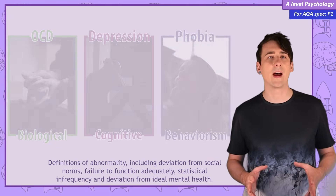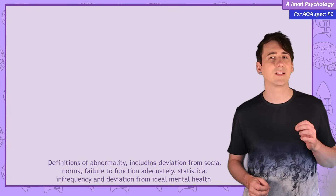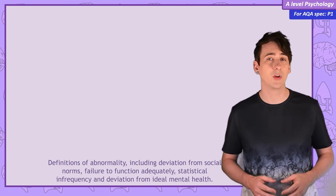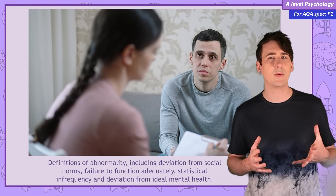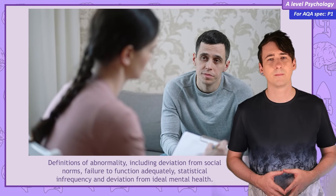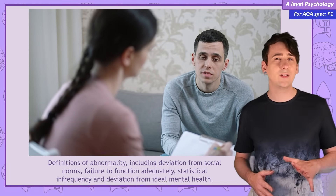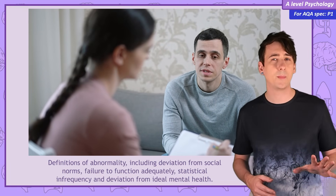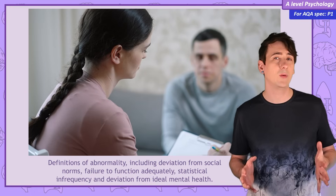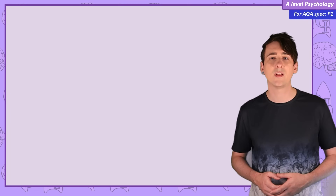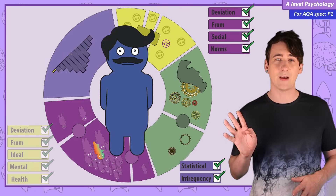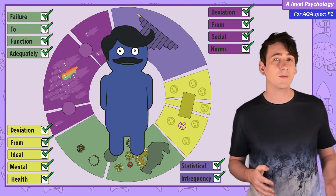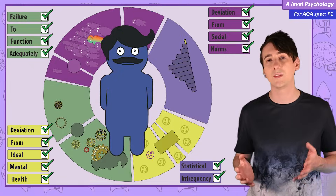But before we start with that we need to consider how to actually define someone as mentally abnormal, and it turns out not to be as easy to come up with a clear definition for abnormality as you might think. This is a definition that includes everyone we'd like to support, while not including people we wouldn't want to define as mentally abnormal. So in this definition of abnormality video we're going to look at four competing definitions of abnormality, and the strengths and weaknesses of each.